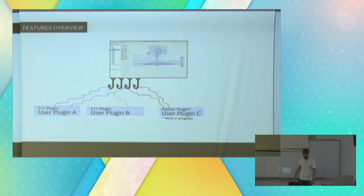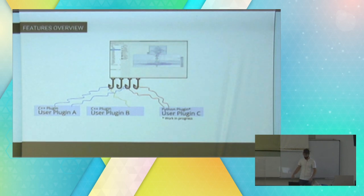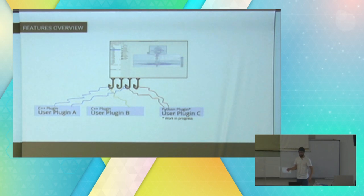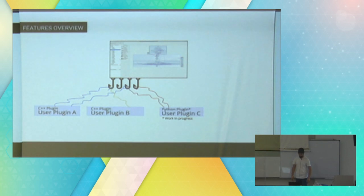We've been working on several plugins for the system because we want the community to be able to produce more and more plugins and functionalities. You can inspect and visualize your code in different ways. Today we have basically two types of plugins: the first one is a C++ plugin and the second one is a Python plugin. The difference is basically the language, but they do essentially the same thing.